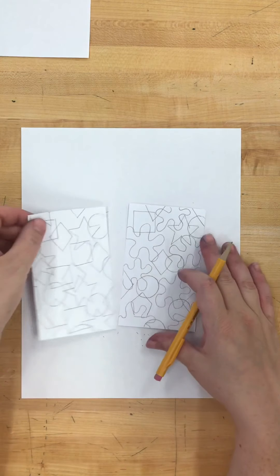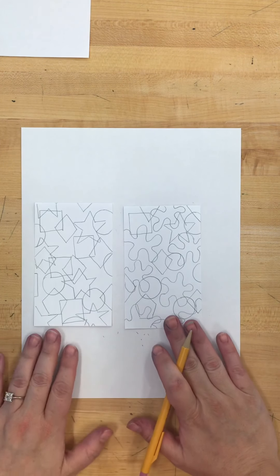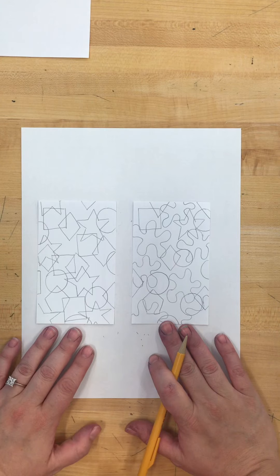All right, so both of these are good examples for shape. Then I'm going to color it in. That's going to be a different video.